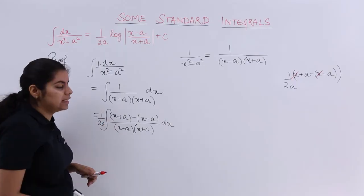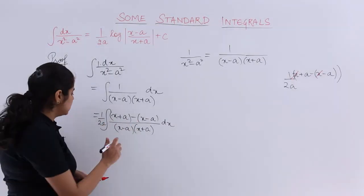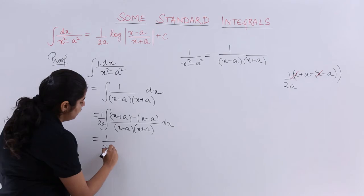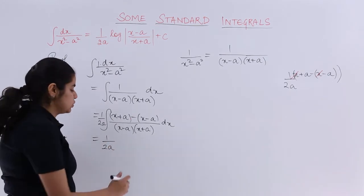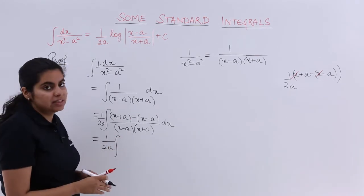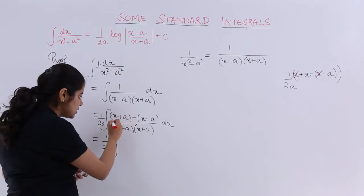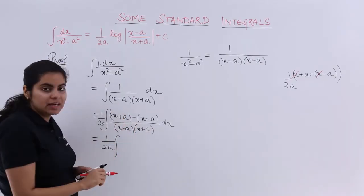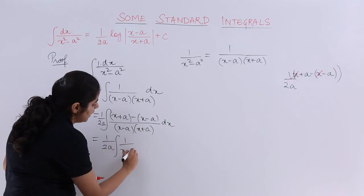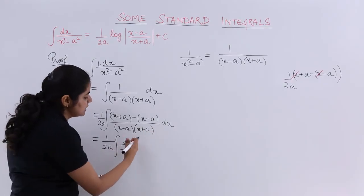Rest everything now is very clear. I see these things getting cancelled. Now it is not that 1 upon 2a is the only thing. We have some other things also. Now let's separate certain things. We are going to see that x plus a upon the whole thing is there. So what we have? We have only 1 upon x minus a because of it and dx is there.